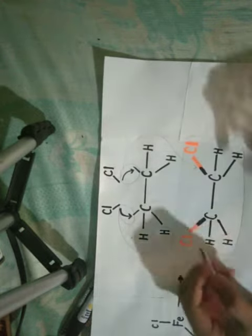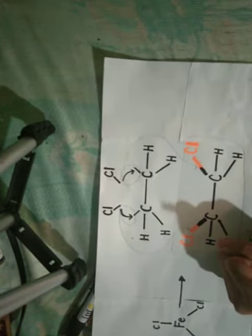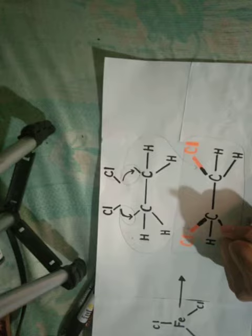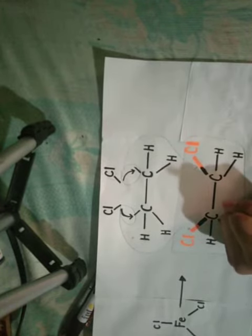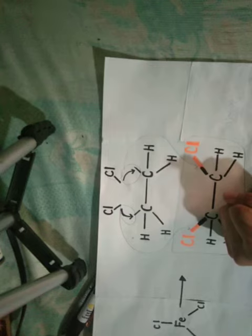So, its name, the name of this compound would be 1-2-dichloroethine.